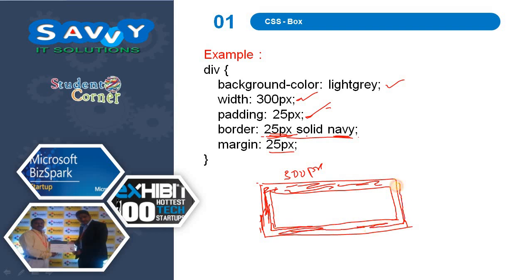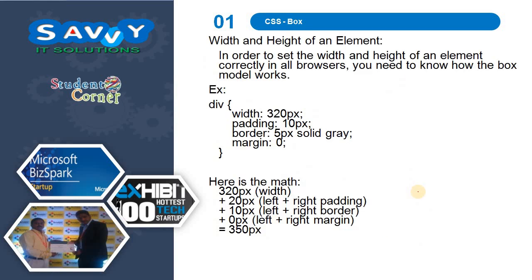The navy color will fill the border, and the text will have 25px of padding, so we leave some space before the text. Margin means if we place the same div again, it takes 25px of margin from one box to another box. That is exactly what this box model describes. The next topic is width and height of an element.